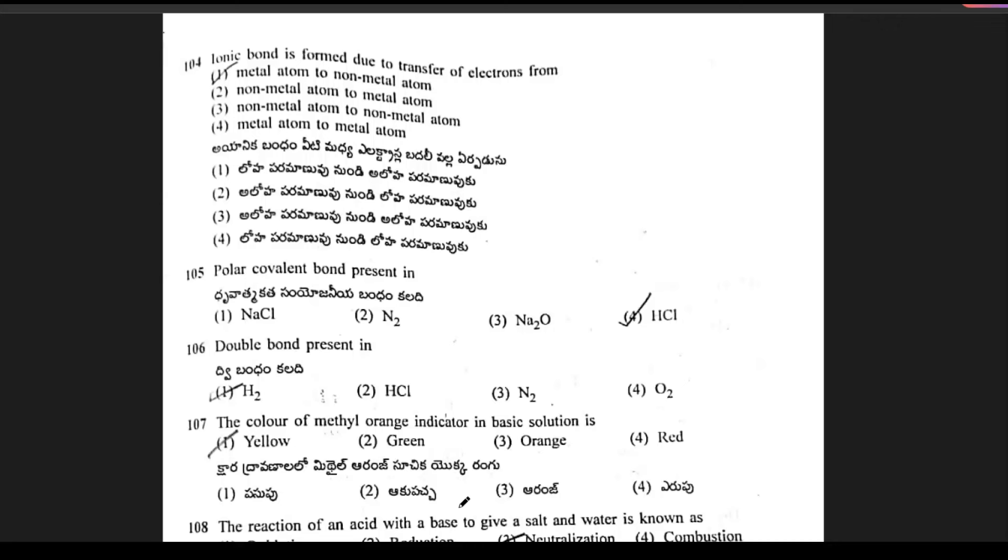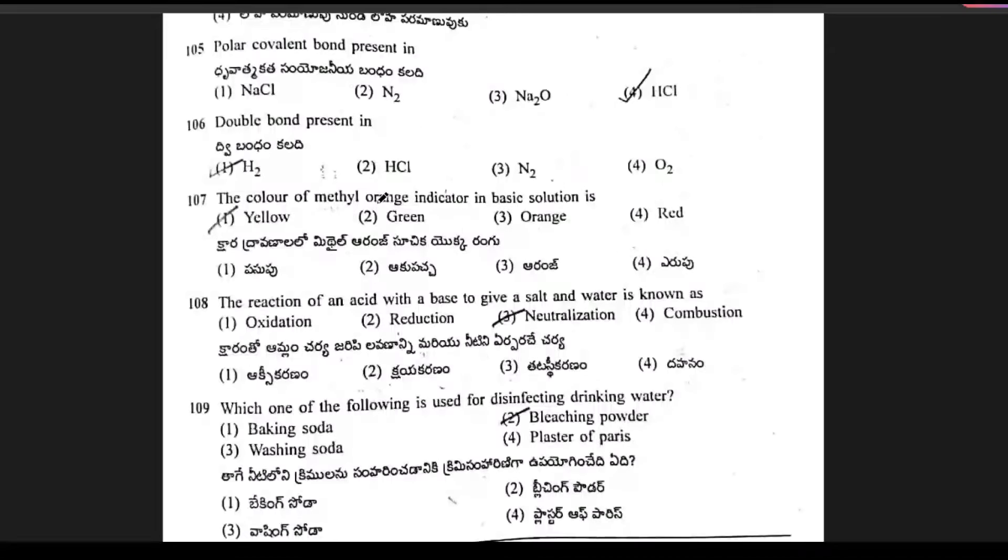Ionic bond is formed due to transfer of electrons from metal atom to non-metal atom. Option 1 is the right answer. Next, polar covalent bond present in? In the molecule, it is HCl. Option 4 is the right answer.